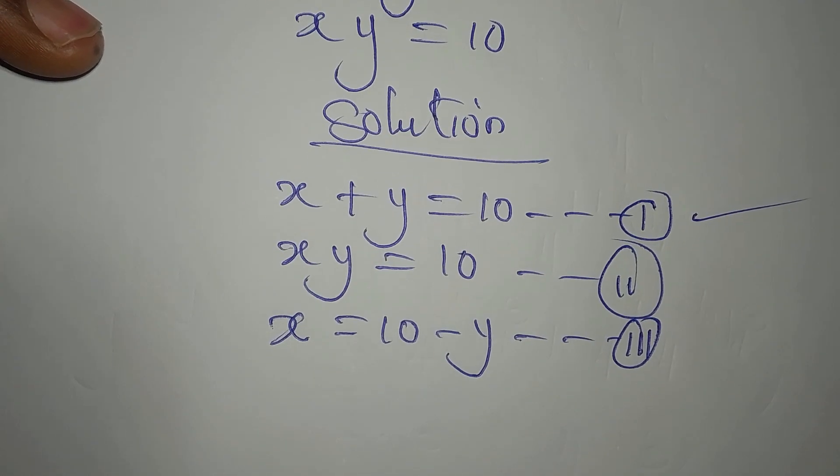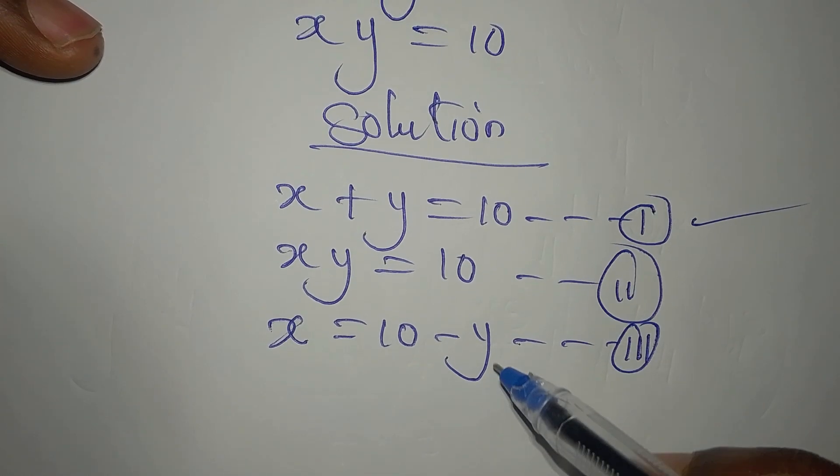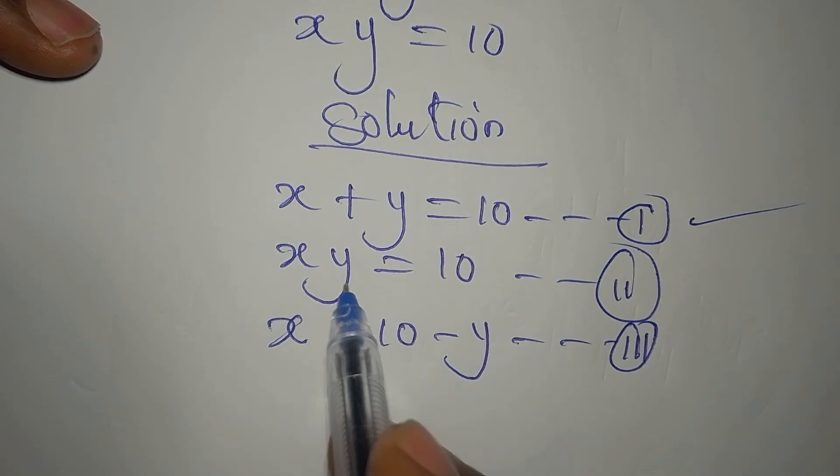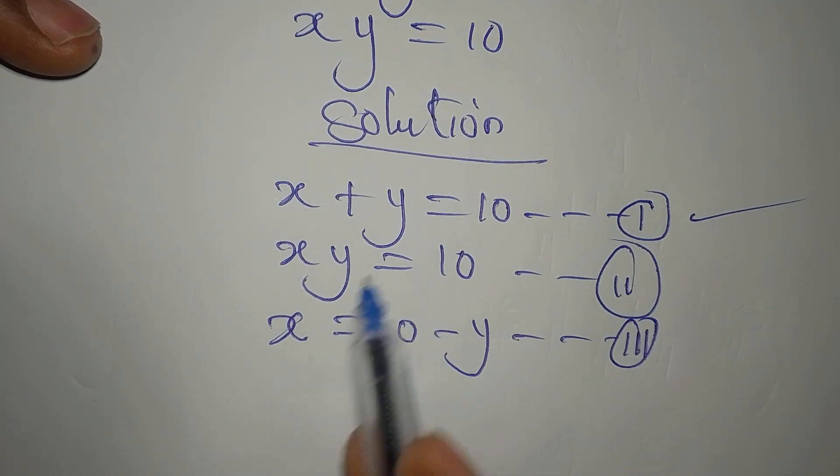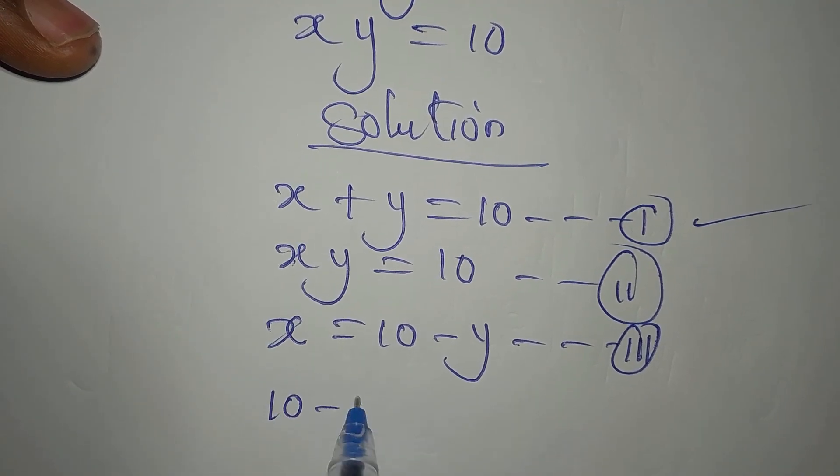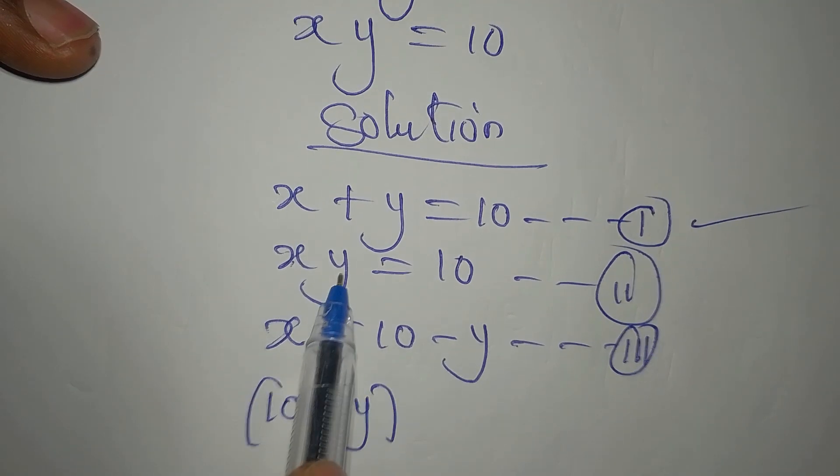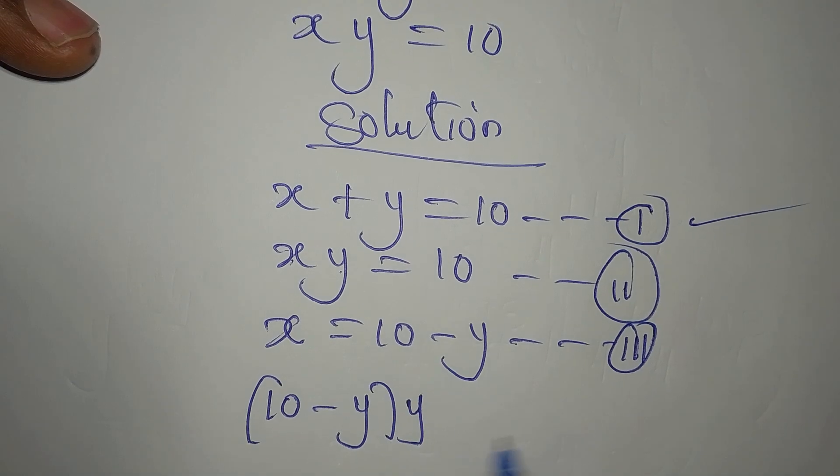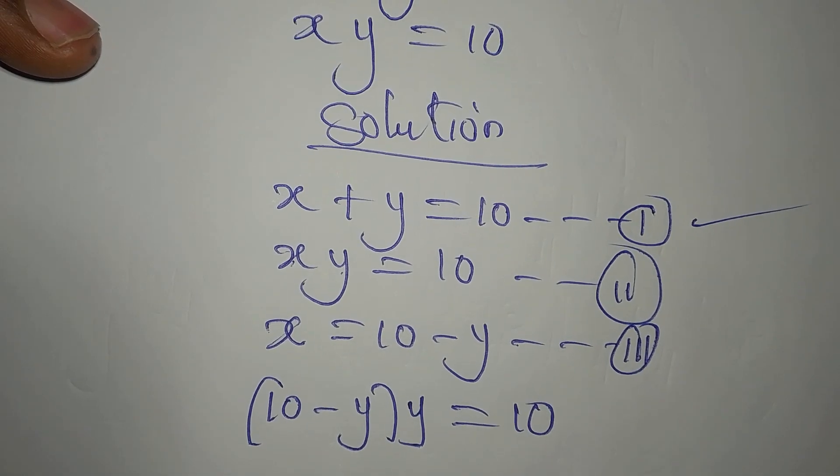Now, since it's equation 1 that gave birth to equation 3, let's put this equation 3 into equation 2. So in place of this X, I'll write 10 minus Y. Then this Y outside is here. The whole of this is equal to 10.